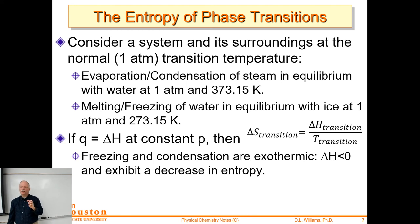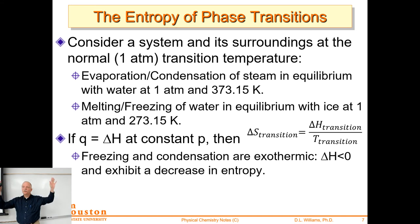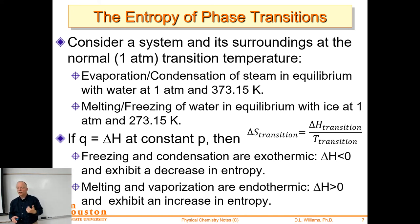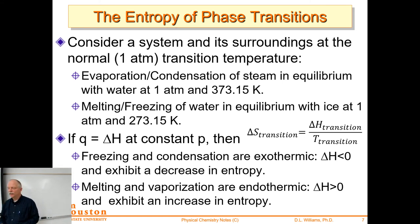Freezing and condensation are exothermic, so delta H is negative, which means delta S is negative — the entropy decreases. Steam has high entropy; becoming liquid water reduces it. Water freezing into ice locks atoms into a small, ordered arrangement — entropy drops. Melting and vaporization are endothermic — positive delta H — so those are increases in entropy. Exothermic processes can have negative entropy changes.